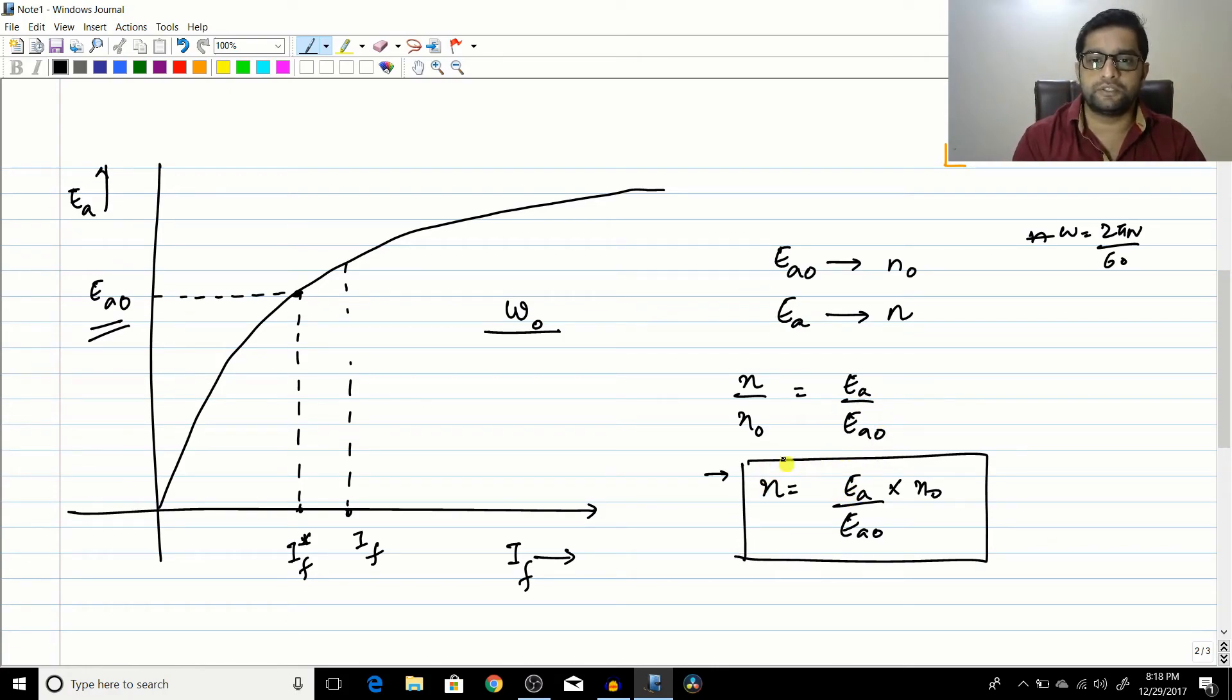That means I can substitute that n by n0 will be equal to Ea by Ea0. That means n is equal to Ea divided by Ea0 multiplied by n0. So this is the equation that we saw in DC motors as well.